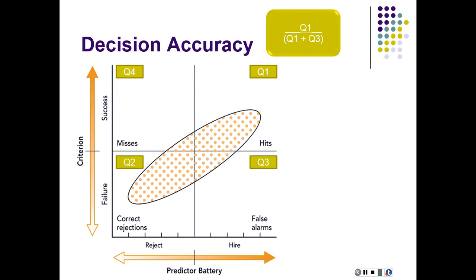Decision accuracy is when you take the participants who are the applicants who fall into quadrant one and divide that by those who fall into the sum of quadrant one and quadrant three. Basically, you take the people who you hired and were successful and divide it by all the total number of people who you hired. So that gives us insight into the decision accuracy. If I hired 10 people and eight of them were successful on the job, then I've got 80% decision accuracy.